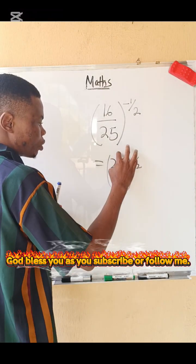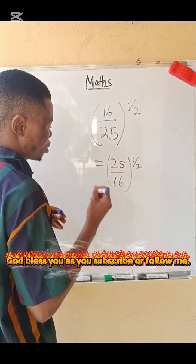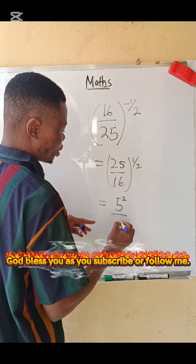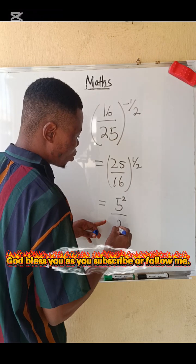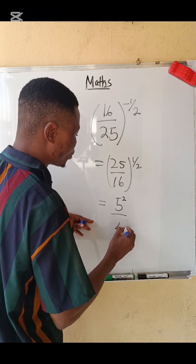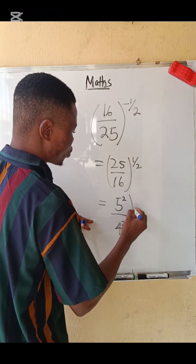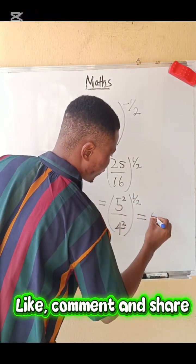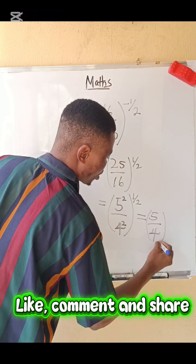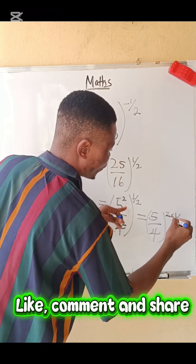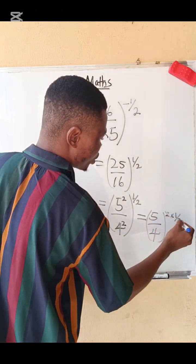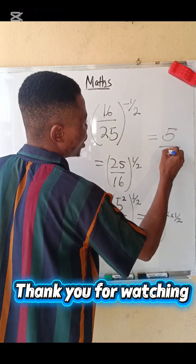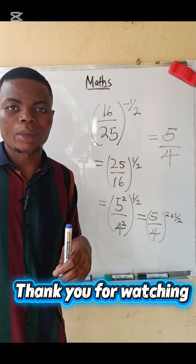You can also factor: 25 is 5 power 2, and 16 is 4 power 2, all raised to the power 1 over 2. From here you can have 5 divided by 4, raised to the power of 2 multiplied by 1 over 2. The 2s cancel, so the final answer becomes 5 over 4. That is the answer.